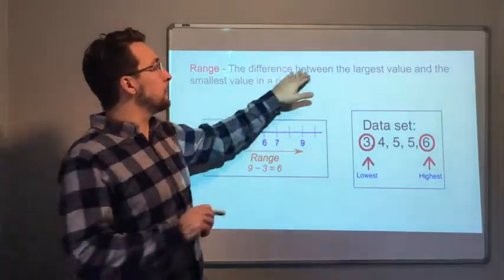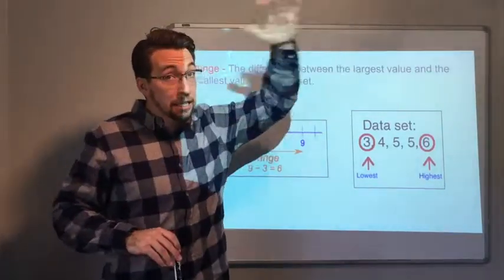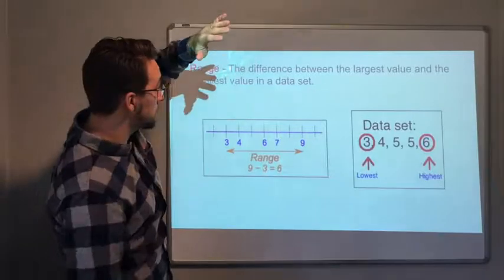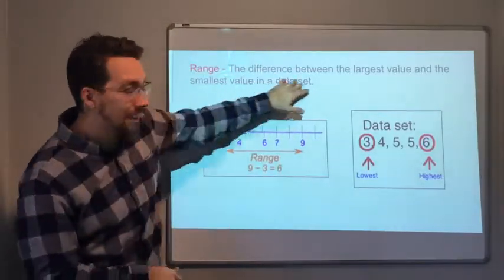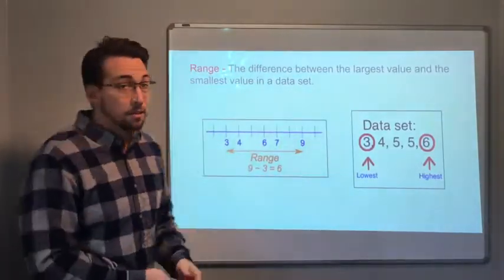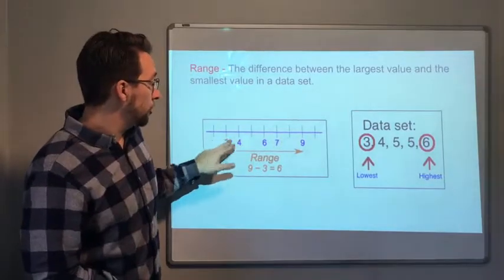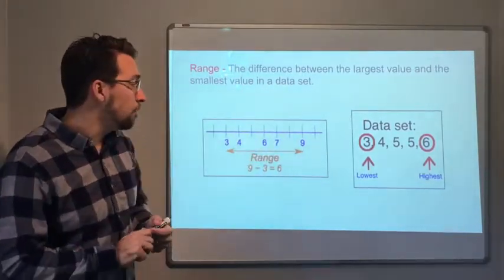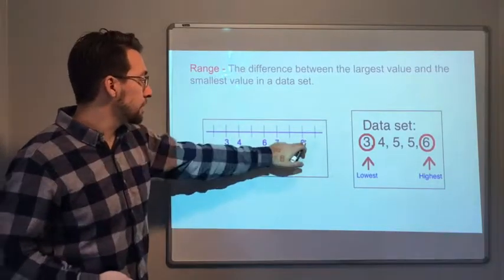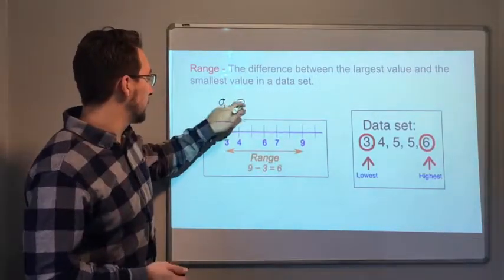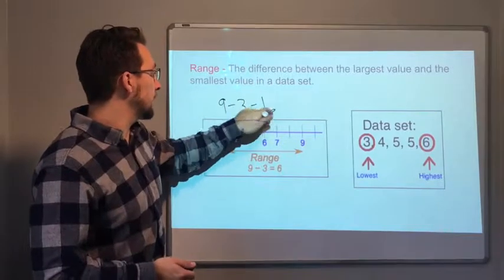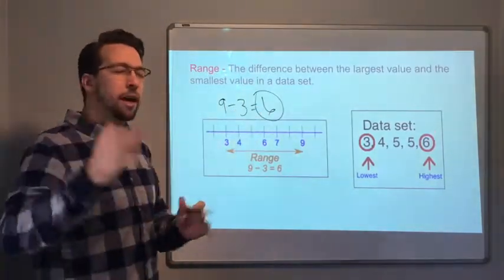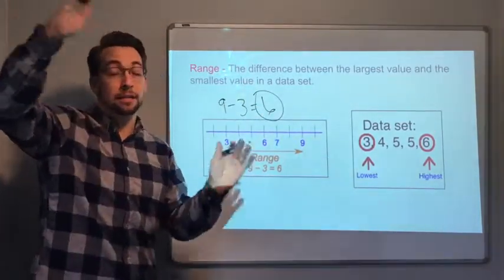The range. The difference between the largest and the smallest. The largest value and the smallest value in a data set. So here's our 3, 4, 6, 7, 9. That's our data set. Well, the range, the largest, nine minus three equals six. Six is the range. There's a range from three to nine is six.